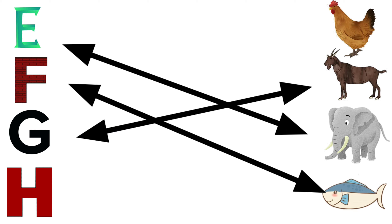E for elephant, G for goat, F for fish, H for hen.